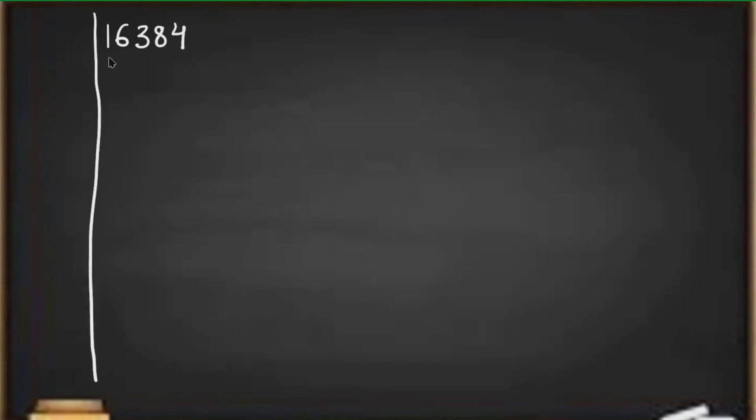Let's take an example of the number 16,384. If we have to find out the square root of this number using the prime factorization method, we have to find the prime factors of this number. I have already shared a video where you can learn how to find the prime factors of a number.